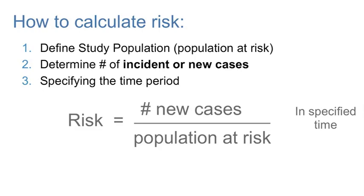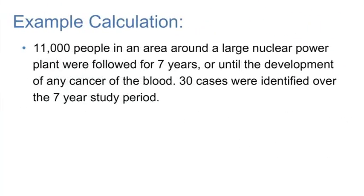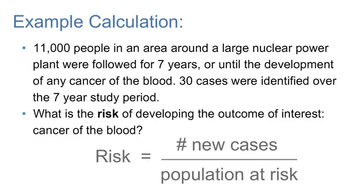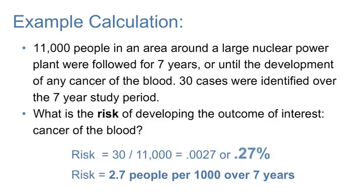Let's try an example calculation. Here we have 11,000 people in an area around a large nuclear power plant, followed for seven years or until the development of any cancer of the blood. Thirty cases were identified over the seven-year period. In this case, we take the numerator as 30 new cases and divide by the population at risk of 11,000. The risk is 0.0027, or 0.27%. Converting to a more easily understood statistic by multiplying by 1,000, the risk is interpreted as 2.7 people per 1,000 over a seven-year time period.